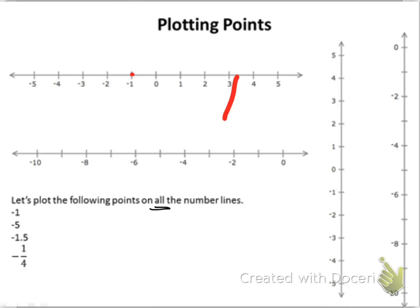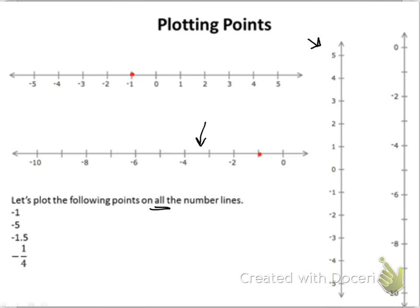Let's look at our next number line. This number line has an interval of 2, but I need to find negative 1. Do you see a negative 1 on the number line? I don't — but that doesn't mean there isn't a negative 1 there. It's just not labeled. I know that negative 1 is in between 0 and negative 2, so negative 1 would be right here on my number line. For the vertical number line, I can actually see negative 1 on it, and I'm going to put my dot right where the two lines cross.